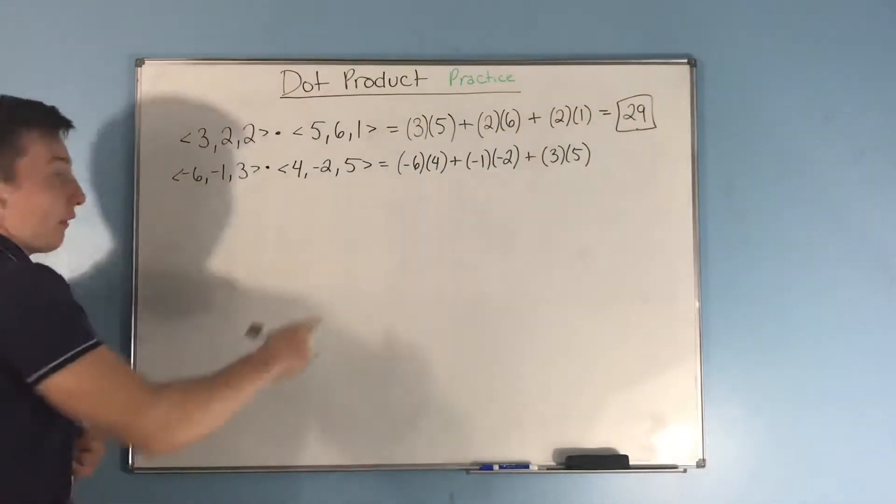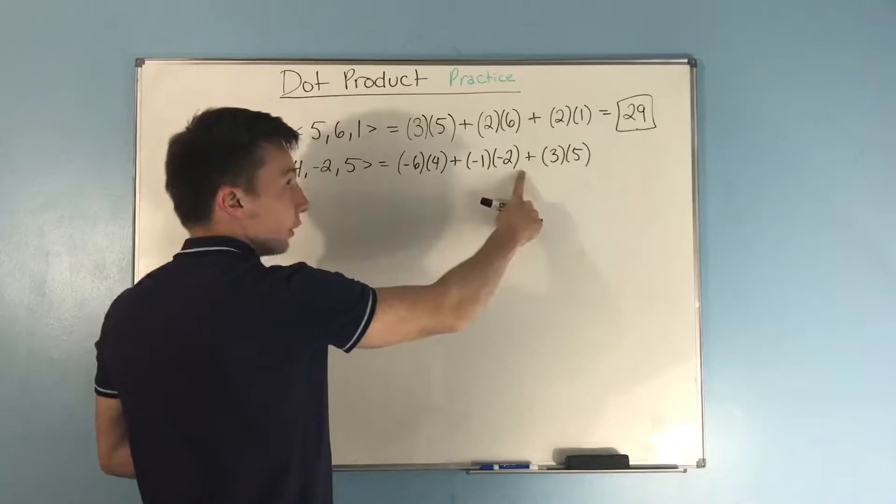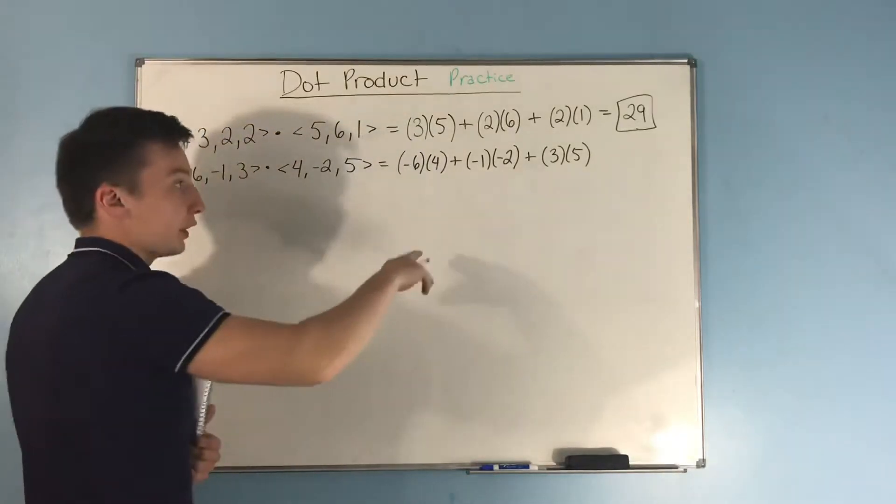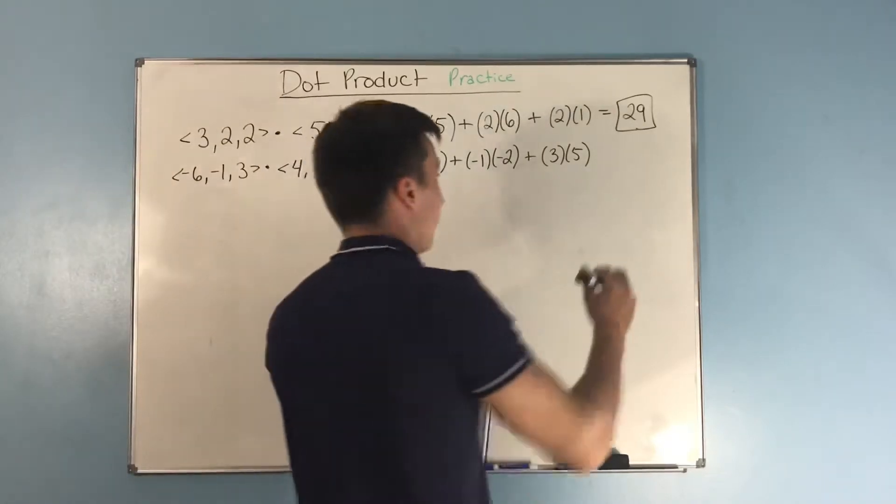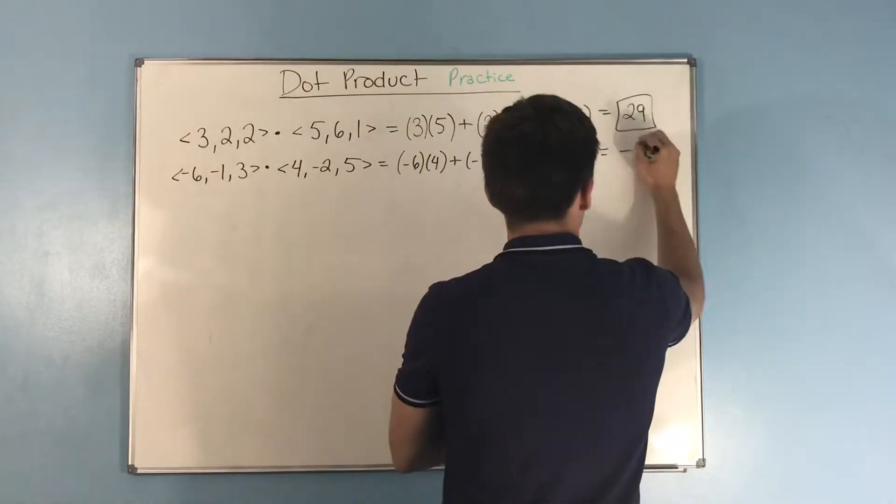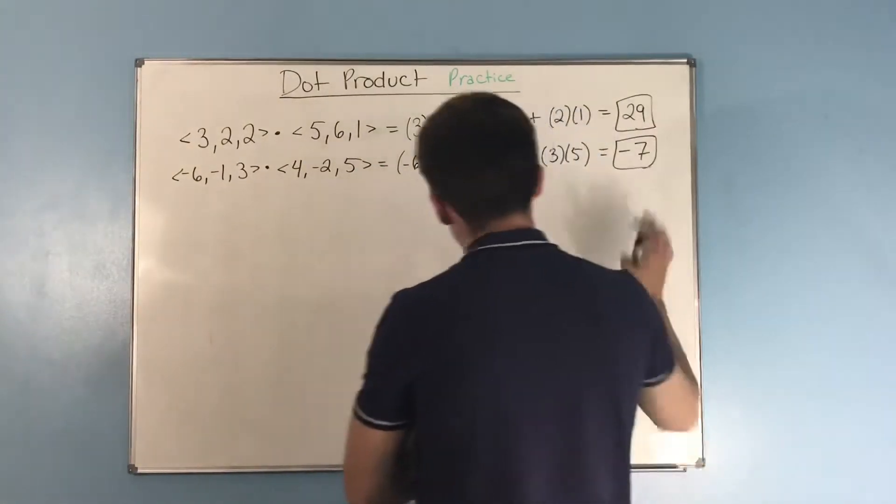Now, we have negative 24 plus 2, which gives us negative 22. And then, it's going to be plus 15, and that gives us negative 7. And there's your dot product.